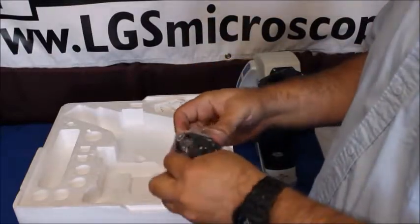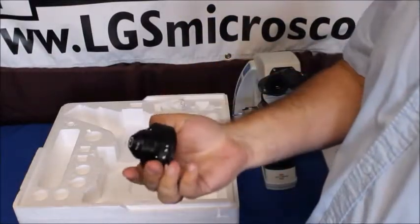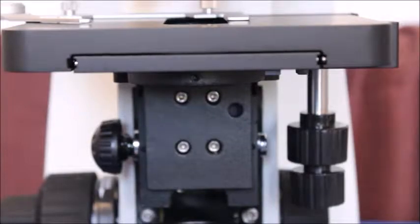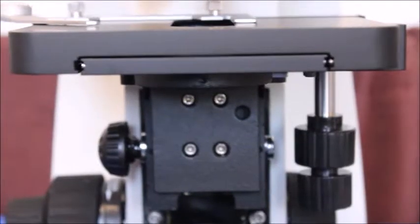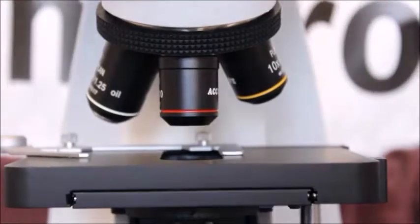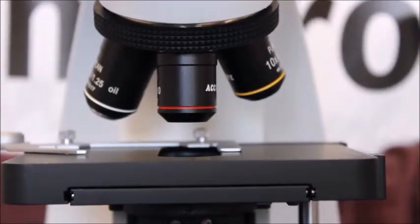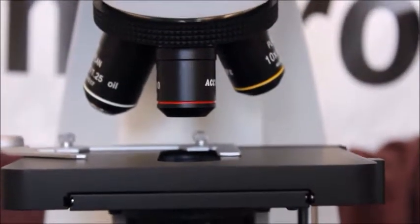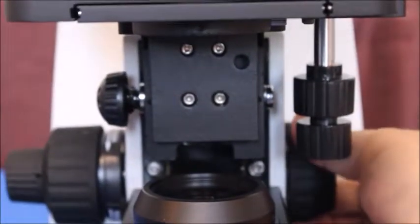So I'll show you how to install this condenser here. Okay, now we're going to install the condenser. So first you want to make sure that your objectives, you're on the 4x objective because it's the farthest away from the stage. We want to raise the stage all the way up using the coarse focus over here or on the other side.